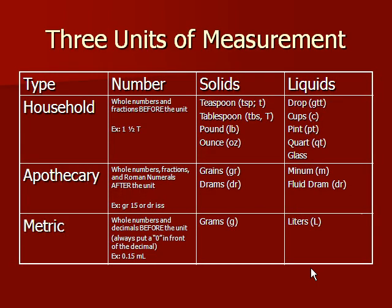There are three units of measurement: household, apothecary, and metric. It is important to note that the apothecary system does not use decimals. These measurements must be in the form of whole numbers, fractions, or roman numerals. Also, the unit of measurement comes before the number, whereas in the case of household or metric units, the unit of measure comes after the number.